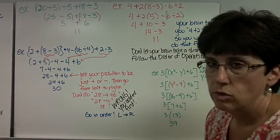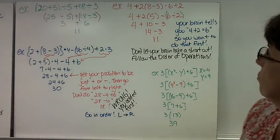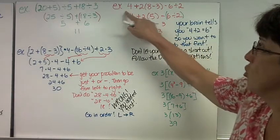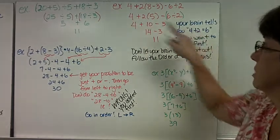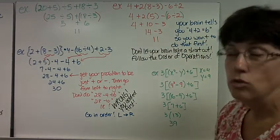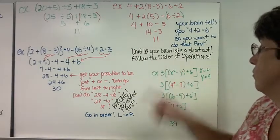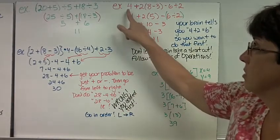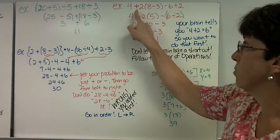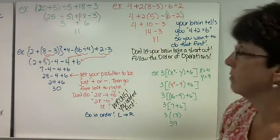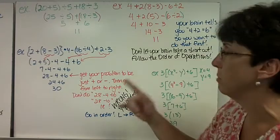Let's look at this problem and see where you could make some mistakes. Your brain tells you 4 plus 2 is 6, but you do not want to do that first. So don't let your brain take a shortcut. You need to follow the order of operations. This is where a lot of students make mistakes. Don't be lazy. Don't let your brain be lazy.